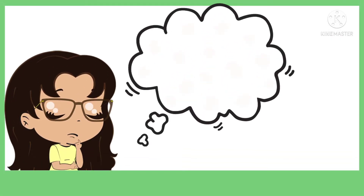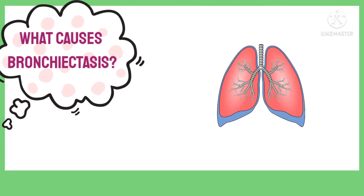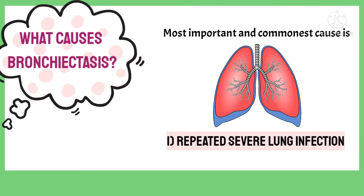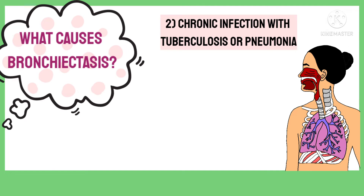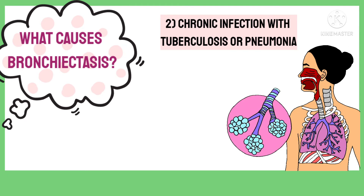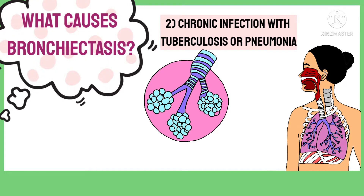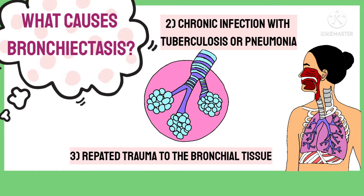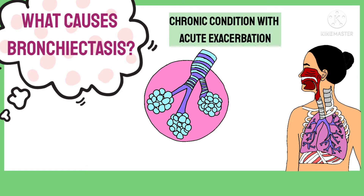The most important and commonest cause of bronchiectasis is repeated severe lung infection. Chronic infections with tuberculosis or those which cause pneumonia can dilate the bronchi due to damage of the bronchial wall. Bronchiectasis does not develop unless there is repeated trauma to the bronchial tissues, and is thus a chronic condition with acute exacerbations.